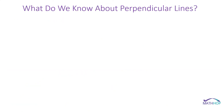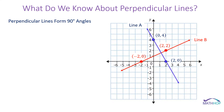What do we know about perpendicular lines? Hopefully we remember from geometry that perpendicular lines cross and form 90-degree angles. Given two lines — line A and line B — graphed on this coordinate grid that are perpendicular, let's look at the slopes and see if we can figure out the relationship between perpendicular lines.